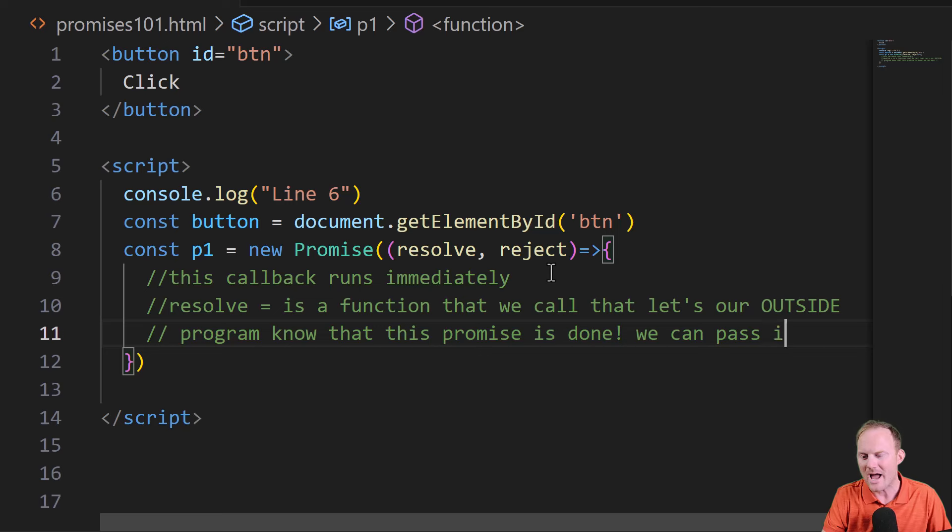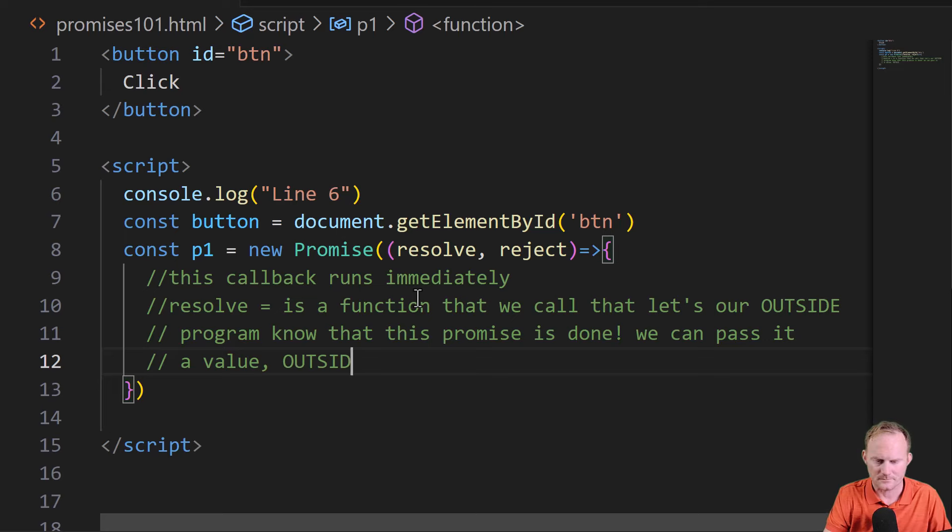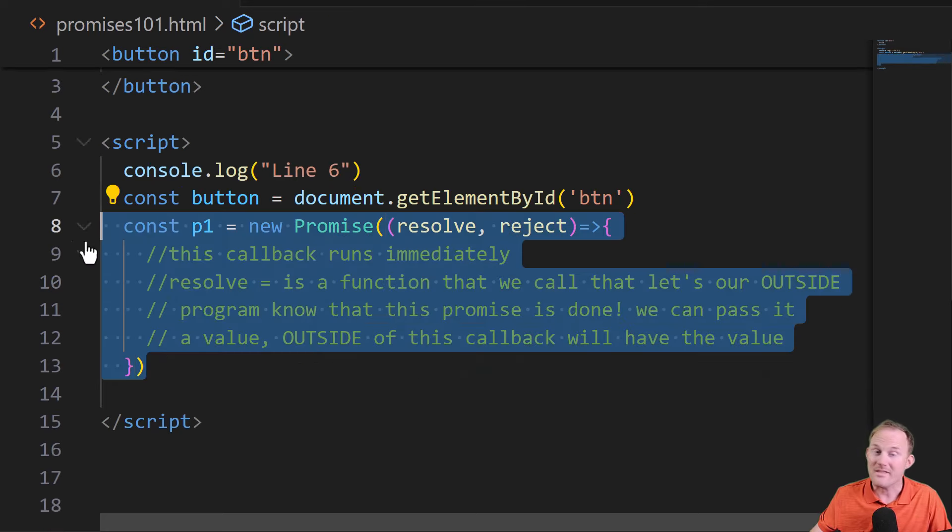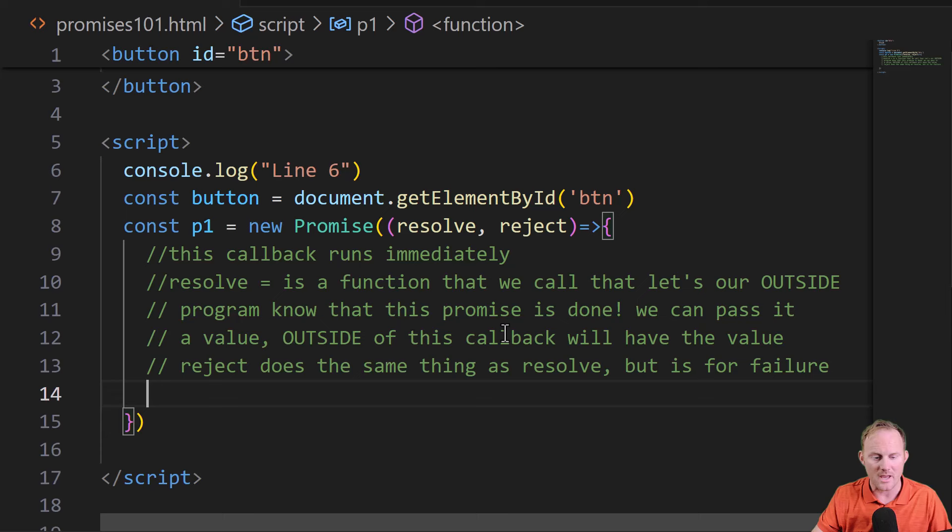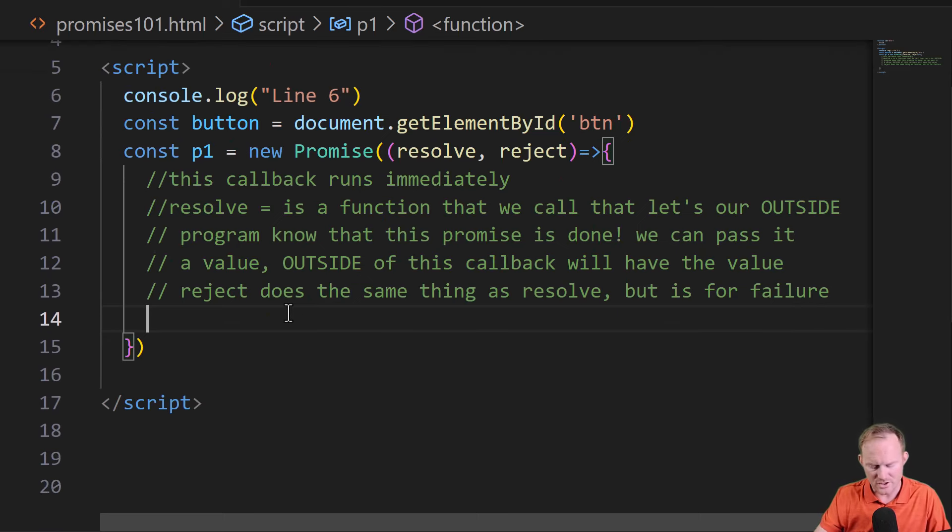We can pass it a value so that outside of our program, we will be able to see it. Alrighty. That is what resolve does. We'll make another note here. Reject does the same thing as resolve, but is for failure. So it means that our promise is done, but something went wrong so that the outside program can make whatever decision it needs to.